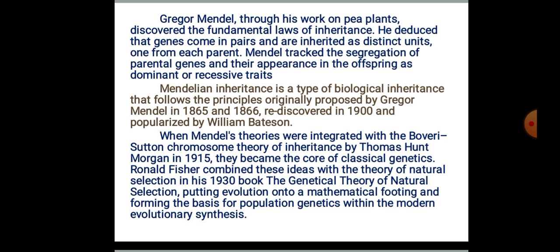From 1856 to 1865, Mendel conducted breeding experiments on garden peas — scientifically called Pisum sativum — in the garden of his monastery, and was luckily the first to formulate clear-cut principles or laws of heredity.